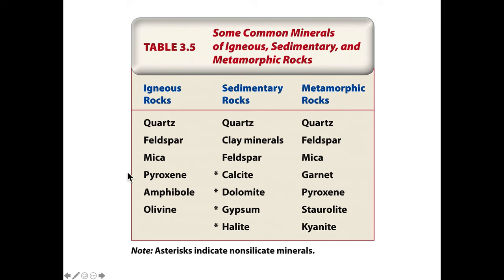Pyroxenes are found in igneous rocks but not regularly in sedimentary rocks because they are very reactive — they weather chemically and physically fairly quickly, so they disappear from the sedimentary record. But they can be reconstituted in a metamorphic rock. Amphiboles are very common in igneous rocks, not common in sedimentary rocks for the same reason, and not common in metamorphic rocks either. So if you find amphiboles, that's a pretty good signal that you've got an igneous rock.